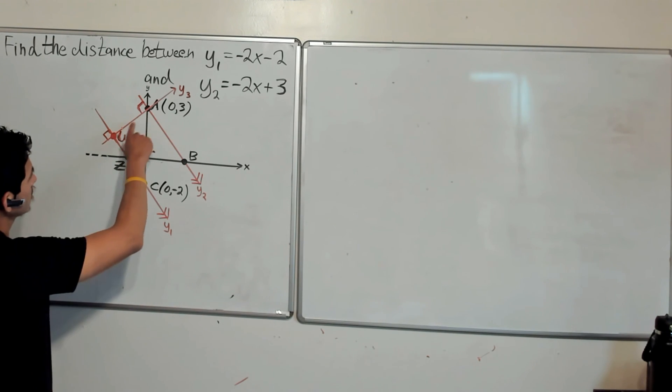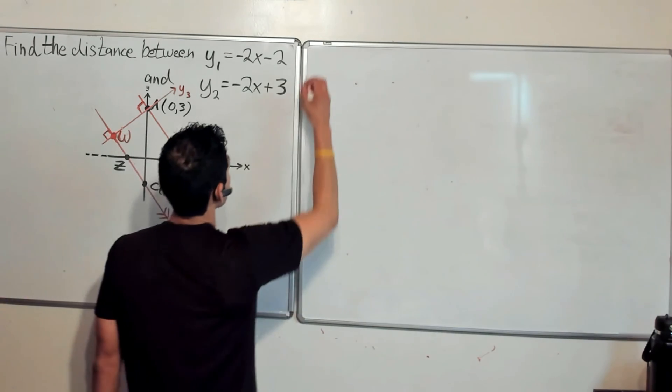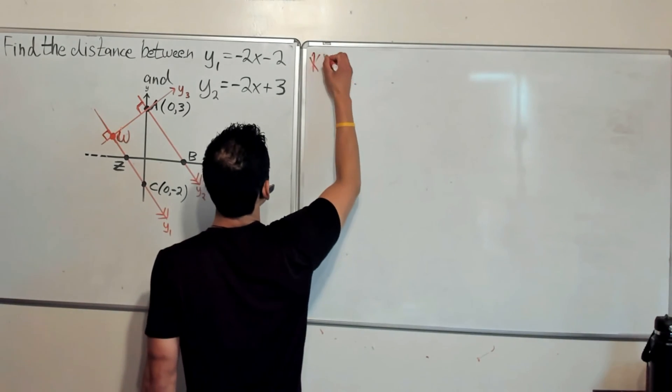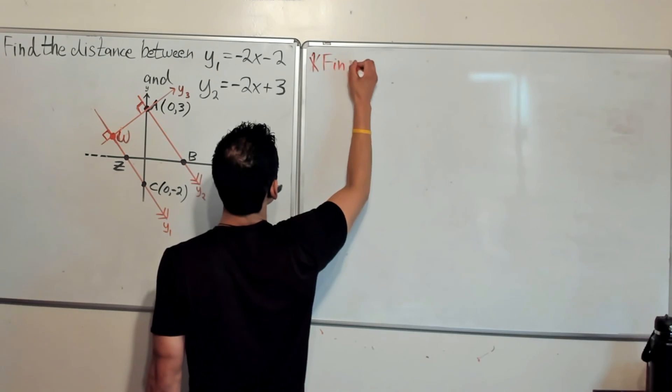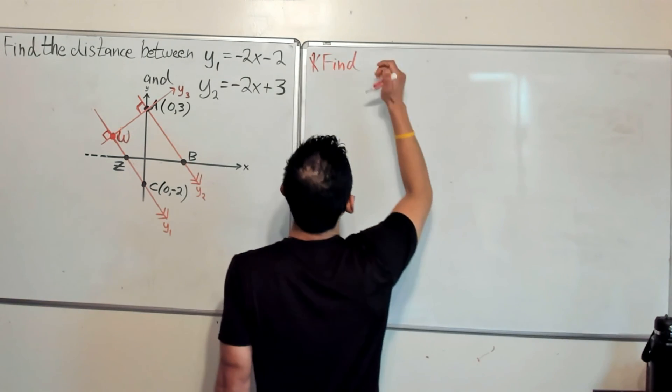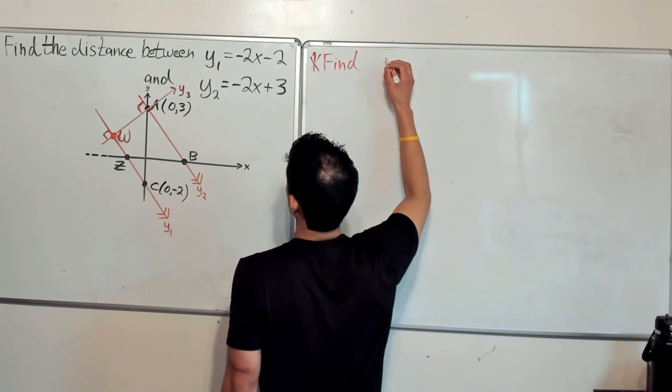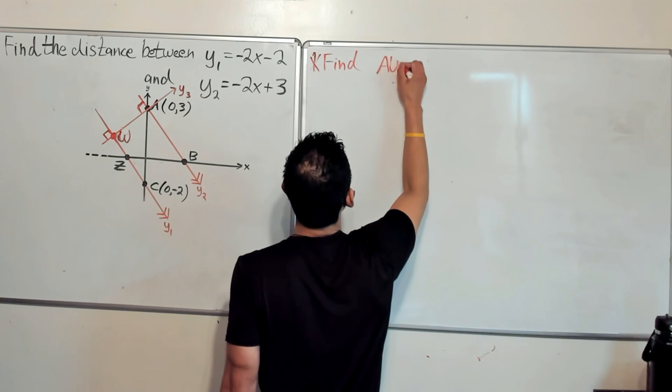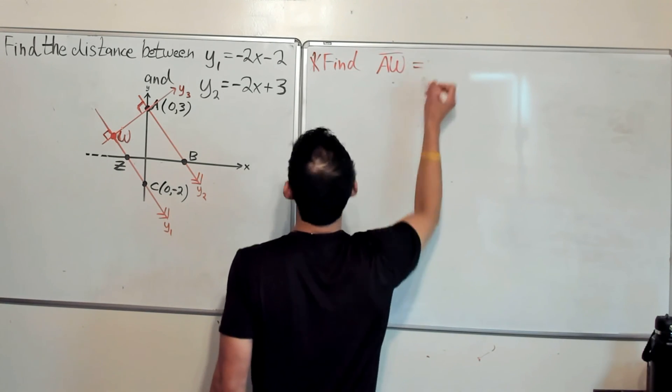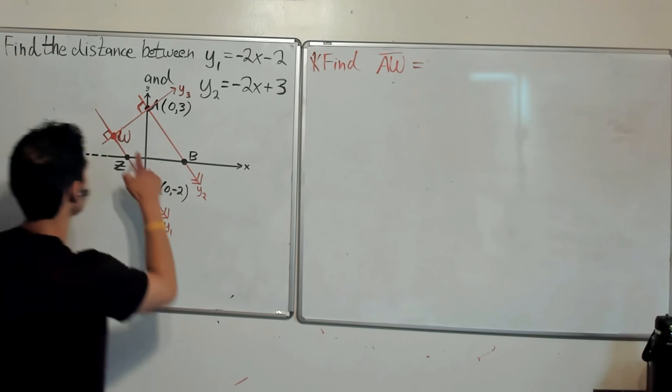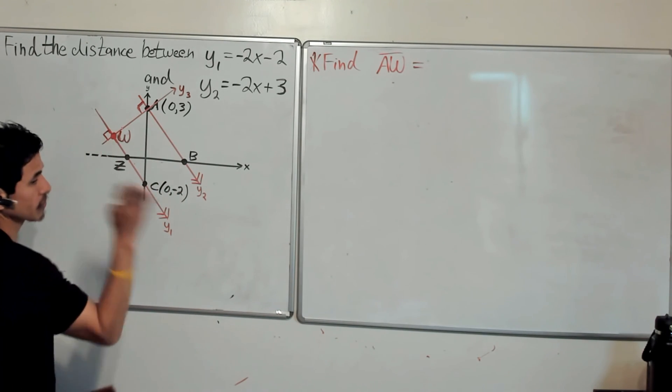So ultimately we want to find the length of the line segment WA. So that's our life goal for the next 10 or 15 or so minutes. So we want to find the length of AW. So we have to find where W is at, we know where A is at so we're good there.